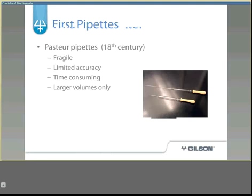The first pipettes invented were Pasteur pipettes, used by Louis Pasteur during his research in the 18th century. They were widely used but eventually improved upon. Some of their limitations include that they are fragile, have limited accuracy, tend to be time consuming, and can pipette only larger volumes of liquid.